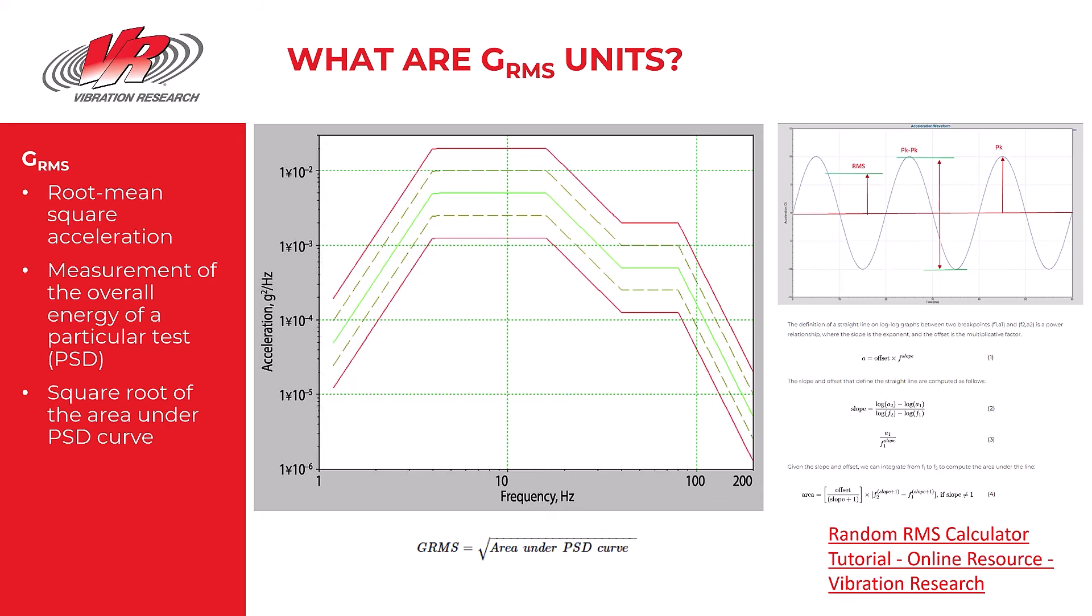This is a very important metric for test engineers. The GRMS is obtained from the PSD plot by taking the square root of the area under the PSD curve. So here's a PSD. Here is the PSD curve we'll call it. We want to find the area under that curve and then square root that answer.